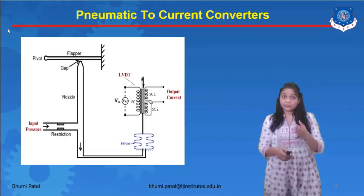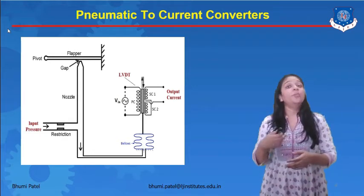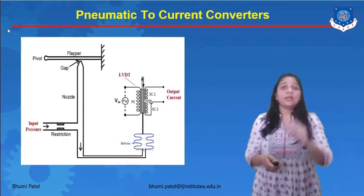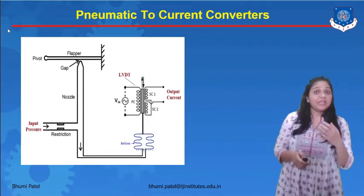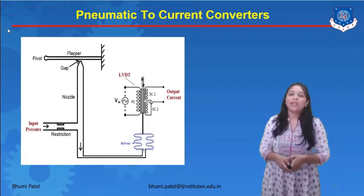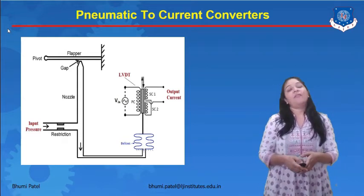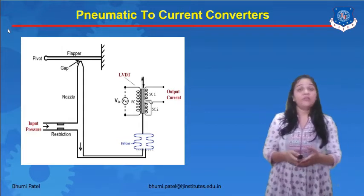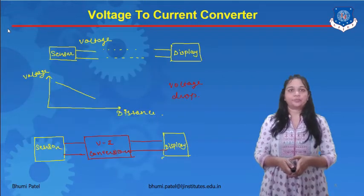The function of the restriction is: if the input pressure applied to the system generates more current than required for that particular system, we can connect a restriction to the input pressure to restrict and minimize it, thereby minimizing the output current as well. In the pneumatic to current converter, we use the flapper-nozzle mechanism, which produces a back pressure and allows us to easily convert the pressure input into the current output.